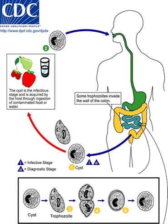The trophozoite life stage of Giardia colonizes and proliferates in the small intestine. Trophozoites develop during the course of the infection into cysts, which is the infectious life stage.